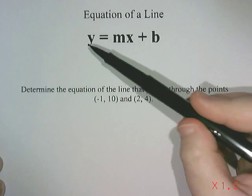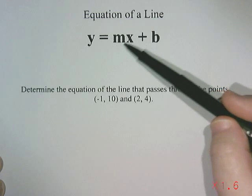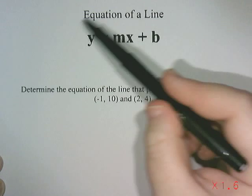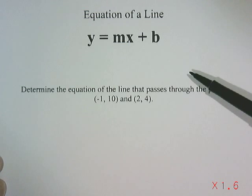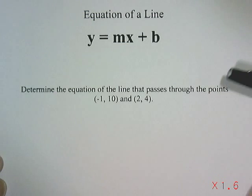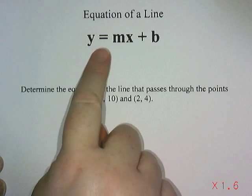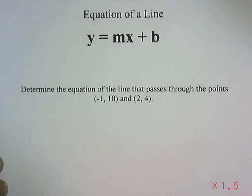And you'll notice up here we have something written down that says y equals mx plus b. And this is the basic equation of a line in something we call slope y-intercept form. So the different letters in the equation all mean different things.